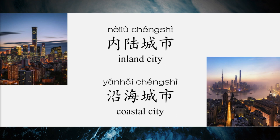北京是内陆城市. Inland city in Chinese is 内陆城市. How do you say coastal city? Coastal city is 沿海城市. Many economically developed cities in China are located in coastal areas. 中国很多经济发达的城市都在沿海地区，比如上海、杭州、广州、深圳都是沿海城市.